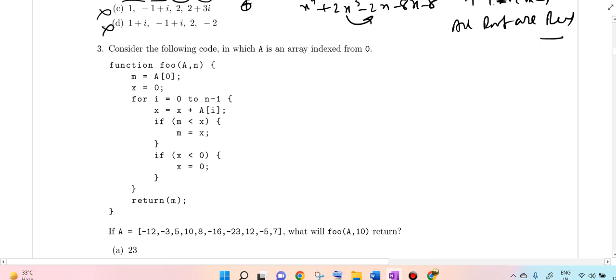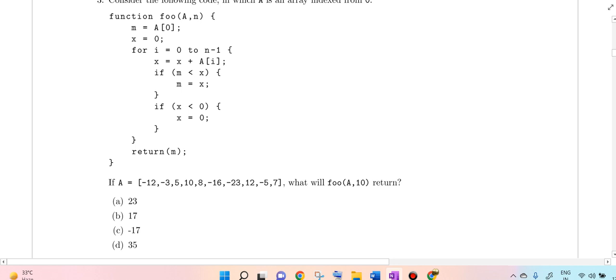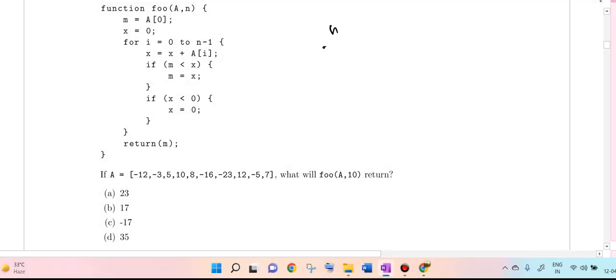This is the following code in which A is an array indexed from 0, and the function returns this. If A equals these values, it returns. This code computes max subarray sum, which is here 5 plus 10 plus 8. This is the maximum subarray sum: 9 plus 10 plus 8, which is 23. So option A is correct.